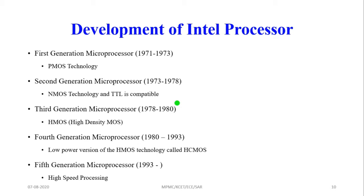The third generation microprocessor was introduced from 1978 to 1980, using HMOS — High-density Metal Oxide Semiconductor — technology. The fourth generation was introduced from 1980 to 1993, using a low-power version of HMOS technology, also called CHMOS.